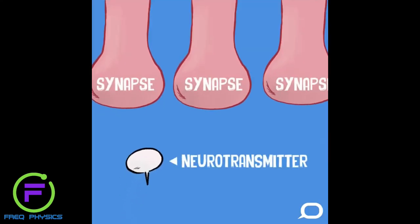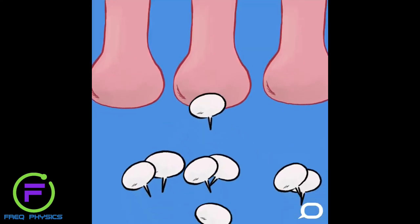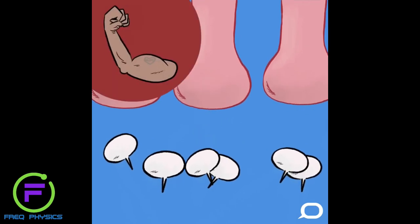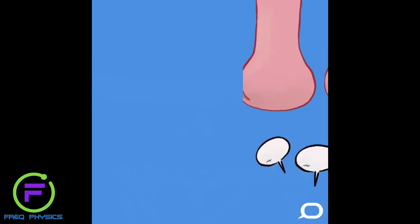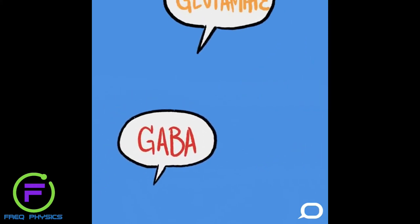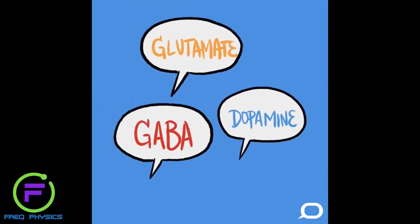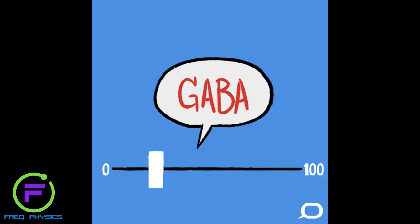Neurotransmitters are chemical messengers used by the nervous system to communicate with nerve cells and muscles. There are a number of different types of neurotransmitters, but alcohol mainly affects three: GABA, glutamate, and dopamine. Ethanol increases the effects of GABA, which is an inhibitory neurotransmitter, which means it decreases electrical activity in the brain, slowing it down.